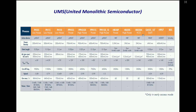Key parameters to consider when selecting a process include operating voltages, frequency range, and power level. In PH25 you are limited to 250 milliwatt per millimeter of power, but PPH25 gives 700 milliwatt per millimeter and PPH25X gives 900 milliwatt per millimeter. Depending on whether you need a low-noise process, medium power, or high power, you select accordingly. These are all the things an MMIC designer needs to keep in mind when selecting a particular process.